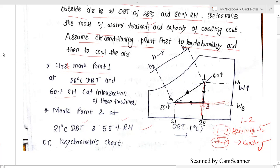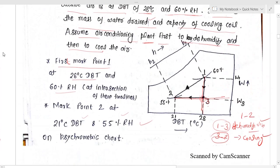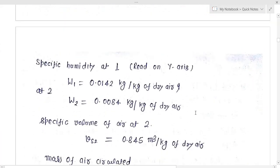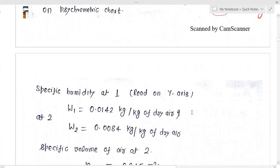From the psychrometric chart you can read the specific humidity values at each point. You will find W1 to be 0.0142 and W2 to be 0.0084. W2 and W3 will be equal at the same specific humidity value since point 3 lies on the same specific humidity line as point 2.